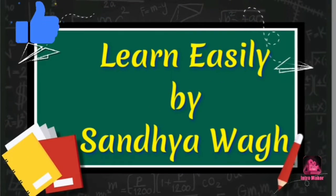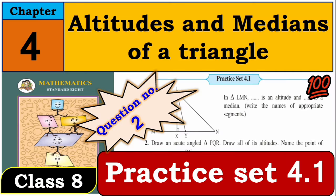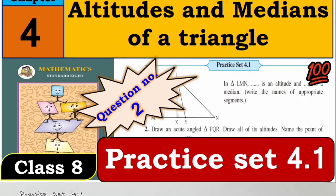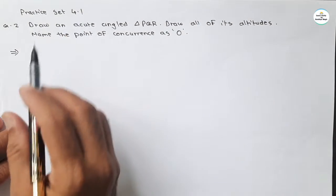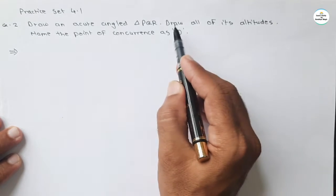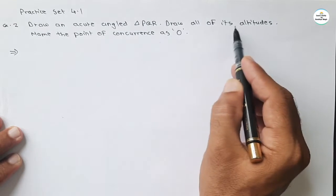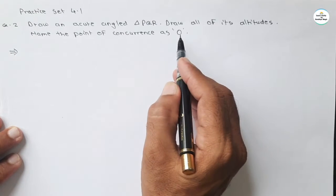Hello dear all, welcome to channel Learn with Sandhya Waag. I am Santosh Waag. Here we will see question number two of practice set 4.1, chapter 4: Altitudes and Medians of a Triangle, class 5 mathematics. The question says: draw an acute angle triangle PQR, draw all its altitudes, and name the point of concurrence as O.